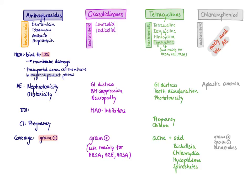We're going to start with the aminoglycosides. Important representatives are gentamicin, tobramycin, amikacin, and streptomycin. Please note they all end in 'mycin.' However, there are more antibiotics that end in 'mycin' that are not aminoglycosides.